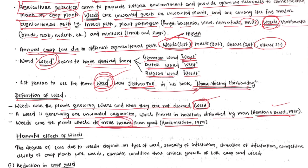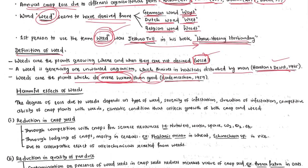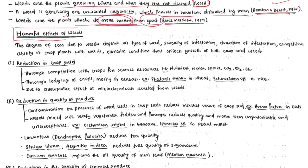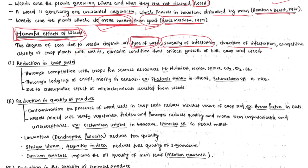Let's discuss the harmful effects of weeds. The degree of loss due to weeds depends on what species of weed is present in the crop field, the severity or density of weed infestation, the duration of infestation, the competitive ability of the crop plant with weeds, climatic conditions, and other factors affecting the crop-weed ecosystem.